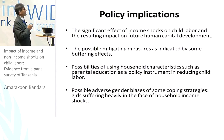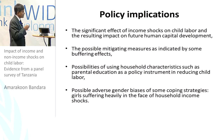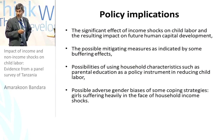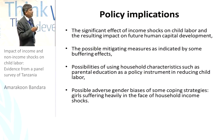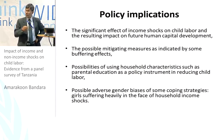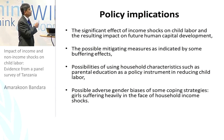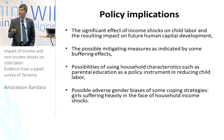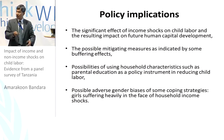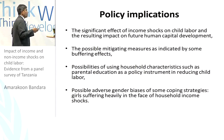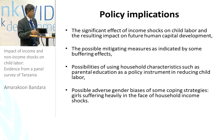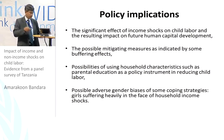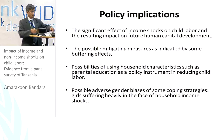In terms of policy implications, four key points emerge: the significance of income shocks on child labor and the resulting impact on future human capital development; possible mitigating measures indicated by buffering effects, especially access to assets and credit; possibilities of using household characteristics such as parental education to reduce child labor; and possible adverse gender biases of some coping strategies, with girls suffering heavily in the face of household income shocks. These are the key issues that probably need to be addressed in terms of policy.